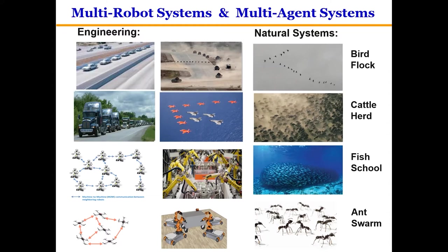However, despite the high-performing computing, communication, sensing, and power devices used in these systems, their effectiveness in uncontrolled environments still falls behind natural systems, such as a swarm of ants, a flock of birds, or a team of worms.